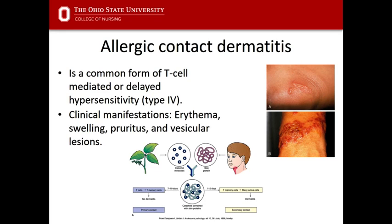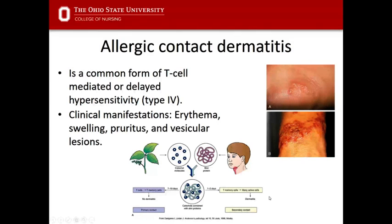The first exposure is essentially a freebie — and it may not even be your first time; it could be your tenth, because these allergies can develop at any time. At some point there will be one stimulation where antigen-specific T-cells develop, and every time after that you'll develop dermatitis. These images show poison ivy reactions. Clinically, you'll see erythema, swelling, pruritus, and vesicular lesions.